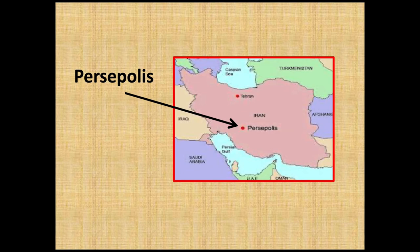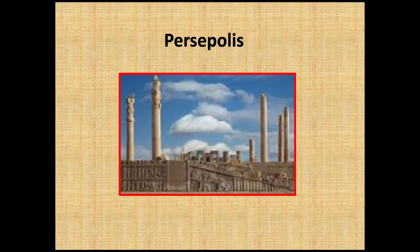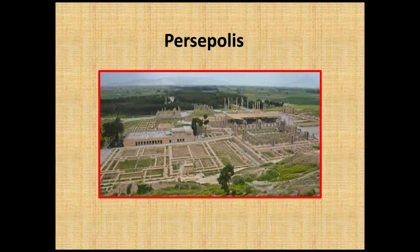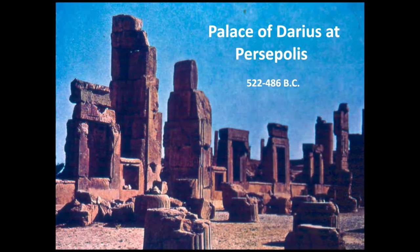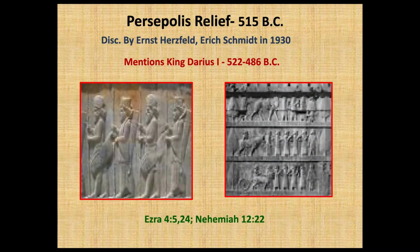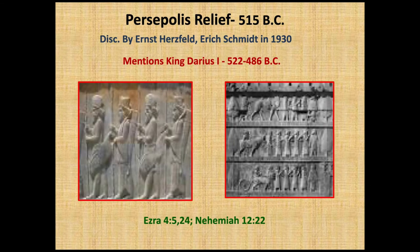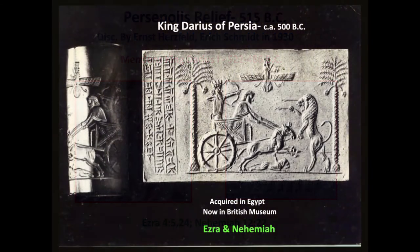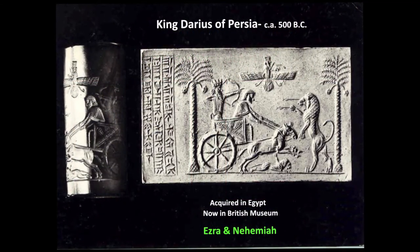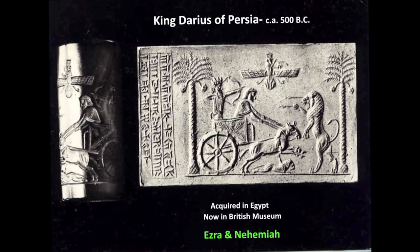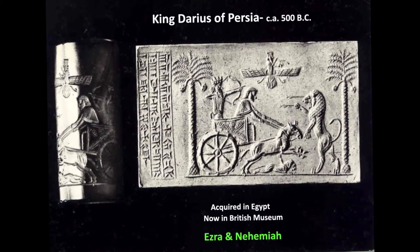One of the capital cities is Persepolis in southern Iran, where the great palace of Darius can be seen — a monumental, tremendous palace. Darius ruled from 522 to 486, and his kingdom covered much of the Middle East. There is a relief on the palace walls which mentions Darius — the same king we find mentioned in Ezra and Nehemiah. King Darius is also found on a clay tablet acquired in Egypt, now in the British Museum, which again confirms King Darius as the one mentioned in Ezra and Nehemiah.